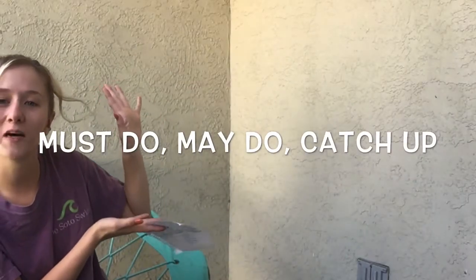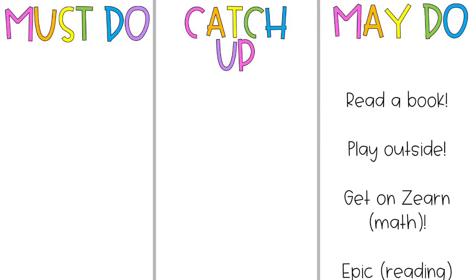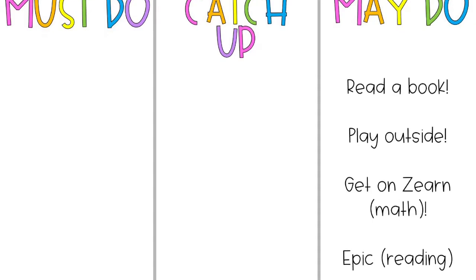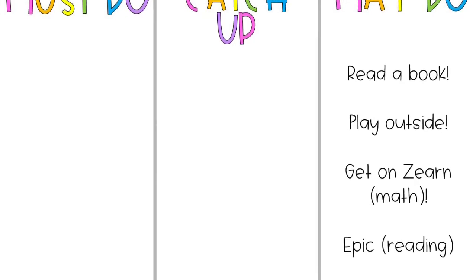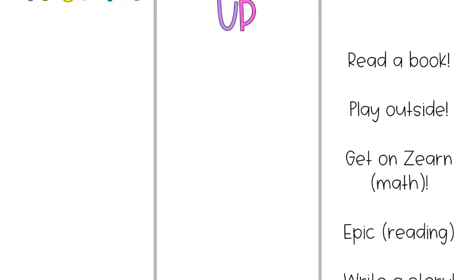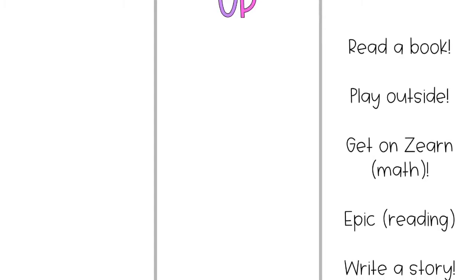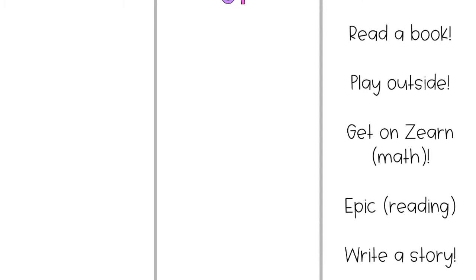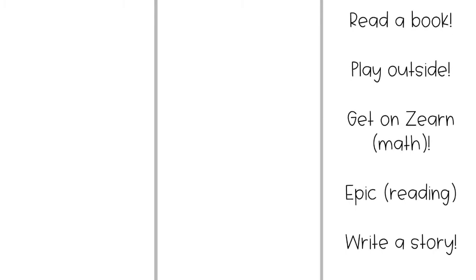This is called our must do may do catch up sheet. You can see on the far left side of the screen is the must do category — these are activities that your student needs to be completing each day. The catch up section in the middle includes activities that your student needs to complete in order to be 100% caught up in class; basically these are just missing assignments that need to be turned in. Lastly, if your student has finished their work for the must do and catch up sections, they may look into the may do section for ideas of things to do. Of course, grown-ups, you are welcome to include activities of your own in the may do section.